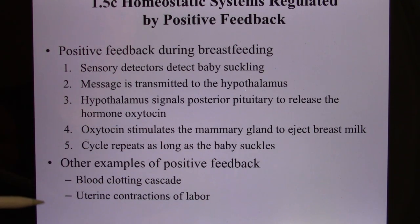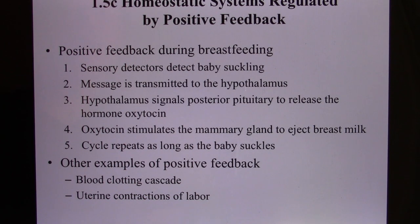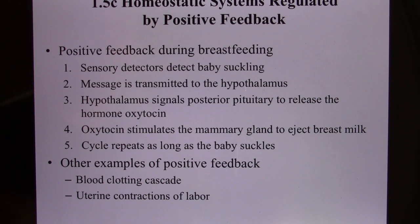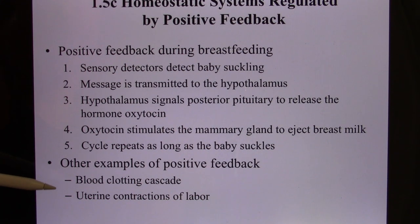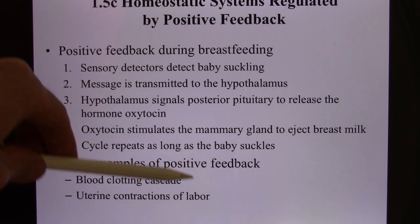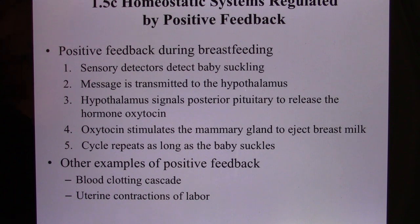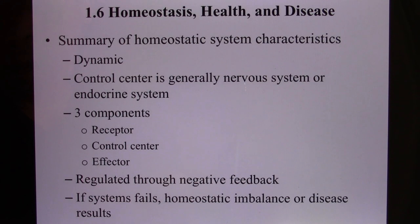The clotting becomes bigger and bigger so it can stop the bleeding — it needs to be positive feedback. The third one is giving birth: labor. It starts from the uterus contracting, and the contraction becomes stronger and bigger. It won't stop until the baby comes out. So this is another positive feedback. Your body only has these three positive feedbacks; all others are negative feedback.